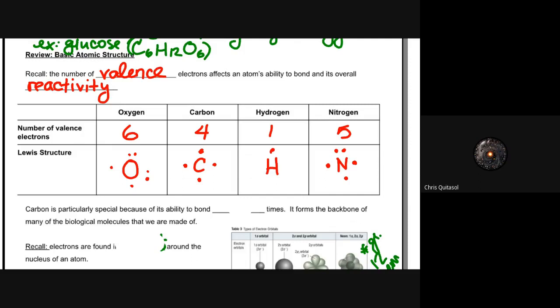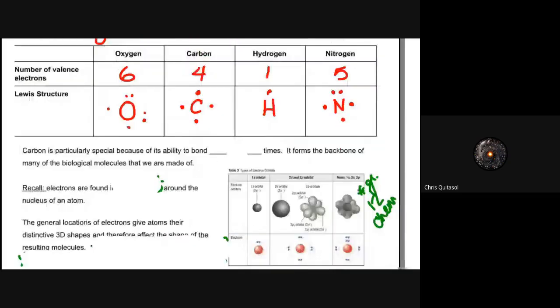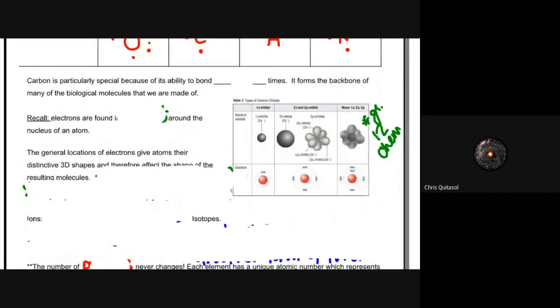So carbon is quite important and quite special. It is the basic backbone of all life, all biological molecules, and many more things—even not just life itself. So the key thing you have to understand is that its ability to bond with four things or four times is very important in biology, but as well as other fields of science, physics, and chemistry.